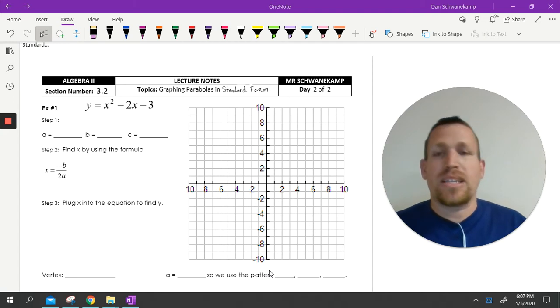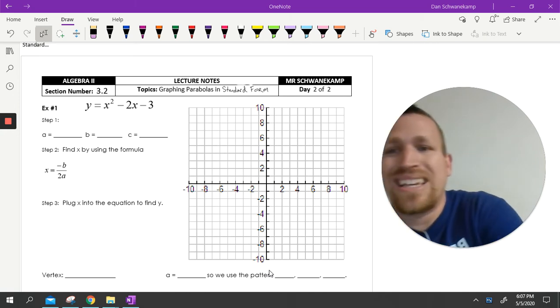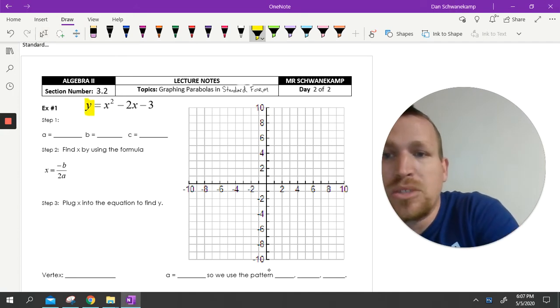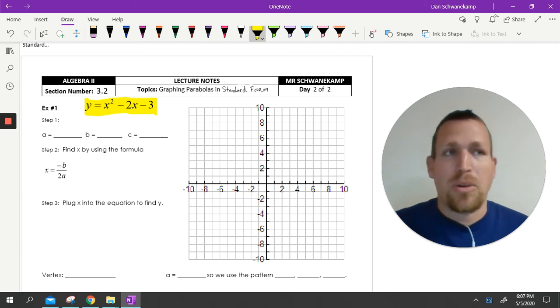Today we're going to continue with what we did last section. The last section, we graphed stuff in vertex form. Vertex form is really easy to graph in, so that's good. Today we're going to graph in standard form. So they're going to look like this. Y equals AX squared minus BX or plus BX plus C, that form right there. A little more challenging, not hard.